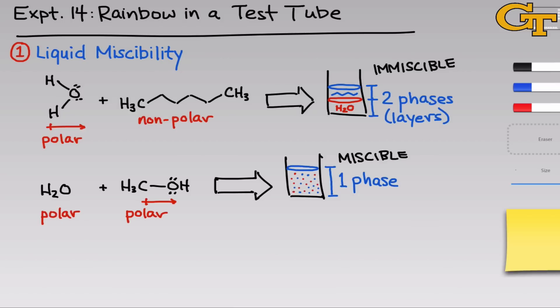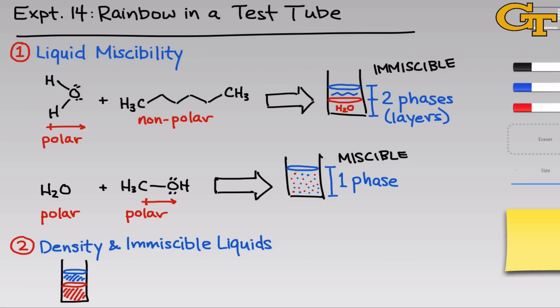In construction of the chemical rainbow, we need to place immiscible liquids next to one another so they won't interpenetrate, and the lighter liquid will sit on top of the heavier liquid. We need to address the question of density for immiscible liquid phases. From practical experience, when two immiscible liquids have strong density differences, the less dense liquid sits on top of the more dense liquid — you'll see this, for example, if you mix oil and water together in a test tube.